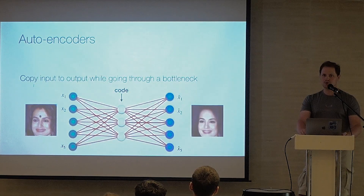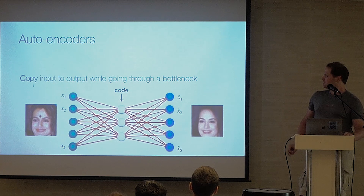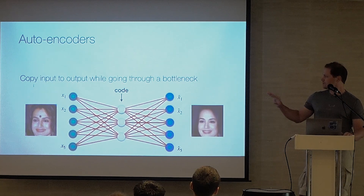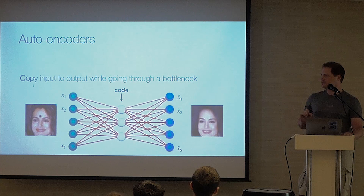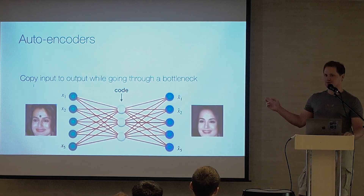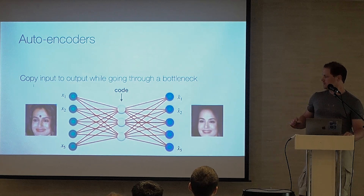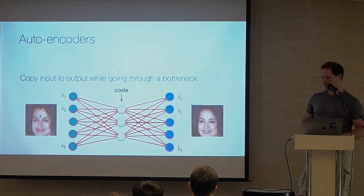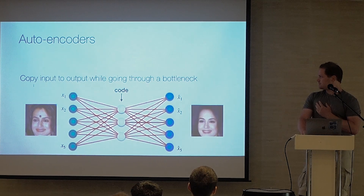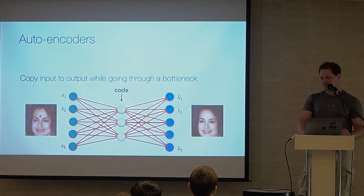What are autoencoders? Autoencoders are about representation. You have images, you put them through a neural network, have some latent code, and then you're trying to reconstruct it. You look at the output, subtract your input, and minimize the reconstruction error. The bottleneck in the middle ensures that you have a more compact representation.